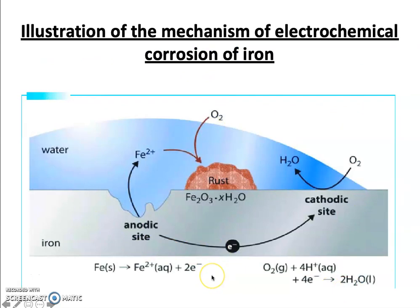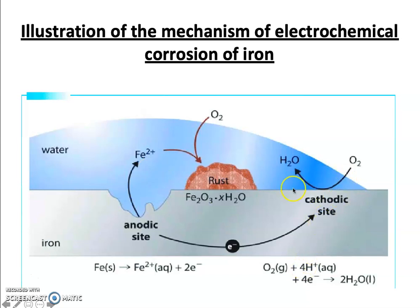In the diagrammatic representation of the corrosion of iron, the metal surface shows one part as the anode and another part as the cathode. At the anode, metal ions are liberated; at the cathode, inorganic ions are produced. These combine to form rust, and the corrosion product is formed between the anode and the cathode.